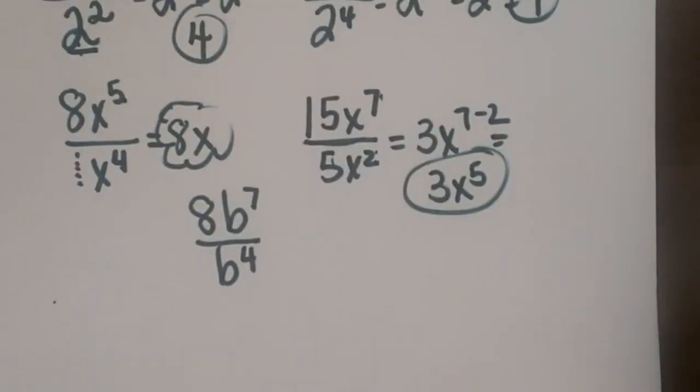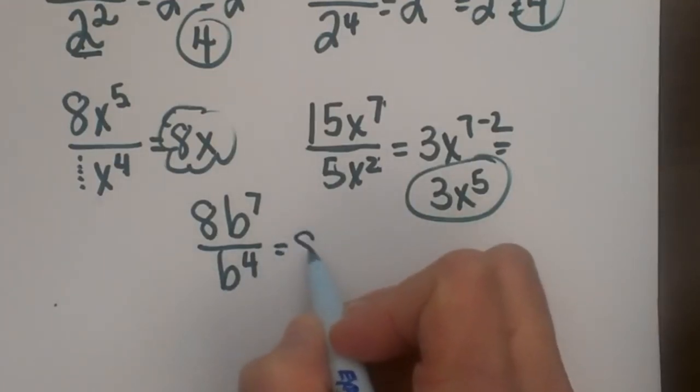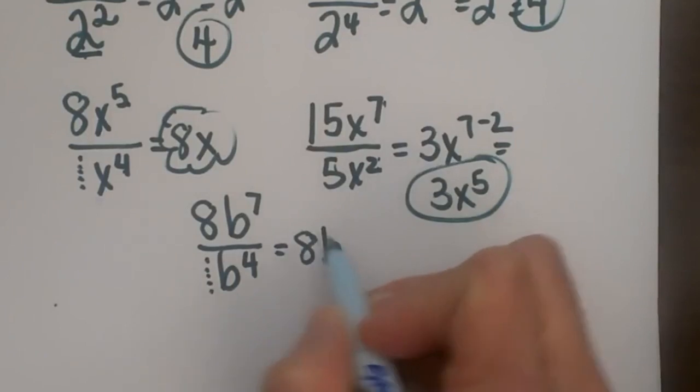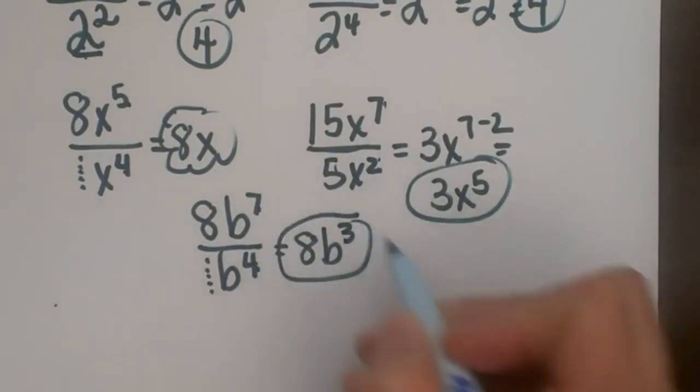Okay, let's look at one more of these. We have 8b to the 7th divided by b to the 4th. The 8 stays an 8 because we're just dividing by a 1. And then b to the 7 minus 4 is 3. So it's 8b cubed.